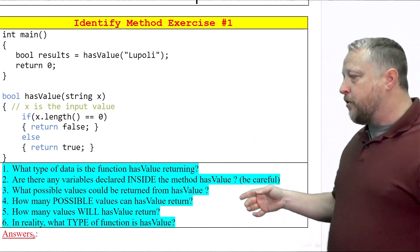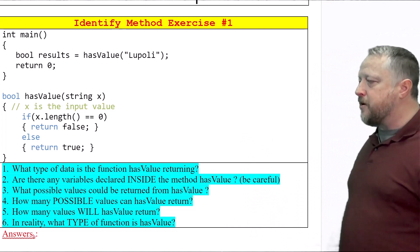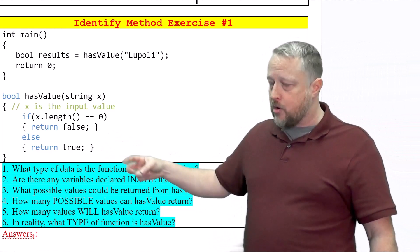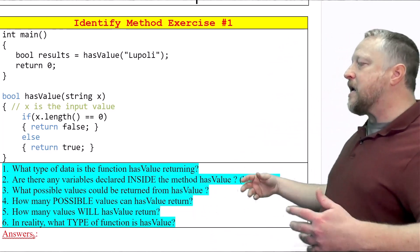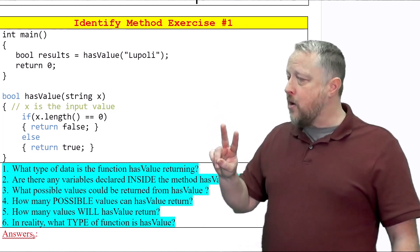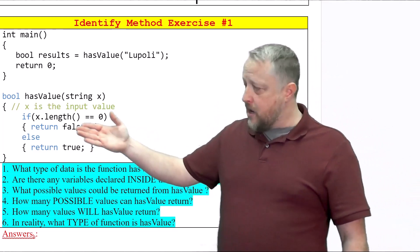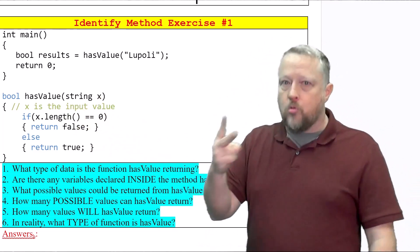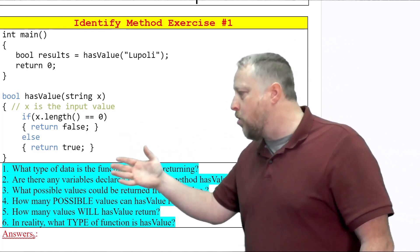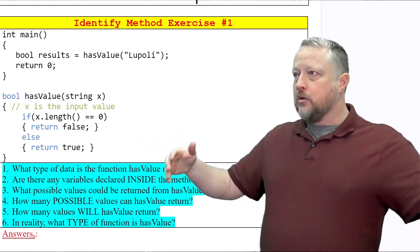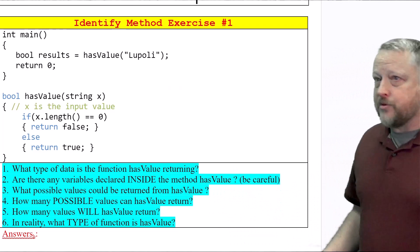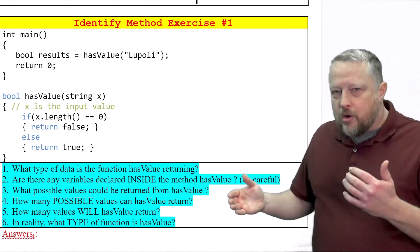Number two was the curveball. If you didn't get it, not a big deal. Number three: what possible values could be returned from hasValue? That is going to be true and false. Number four: how many possible values can hasValue return? That's going to be two. By the way, that's only because this is a boolean. Boolean only has two values that we can return. If this function was a float or an integer, the amount of values that could be returned is almost infinite.